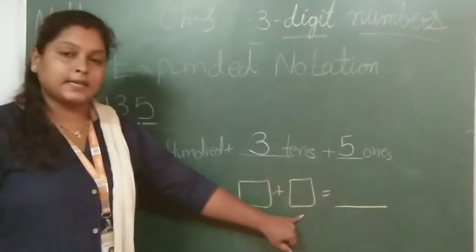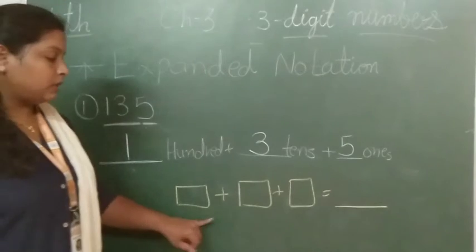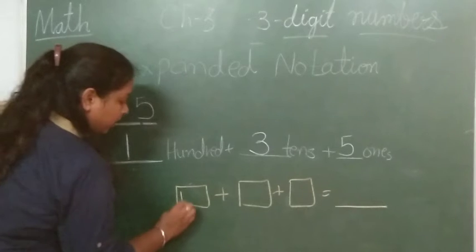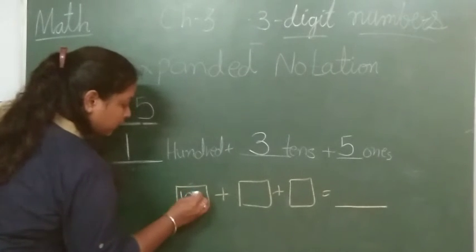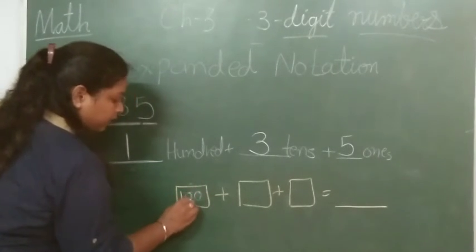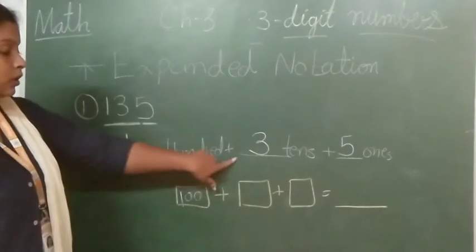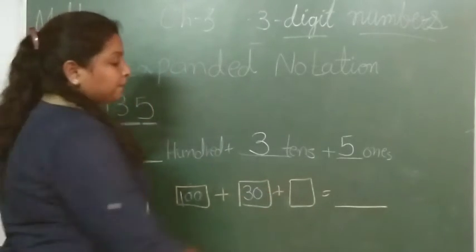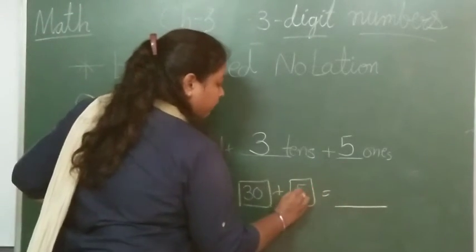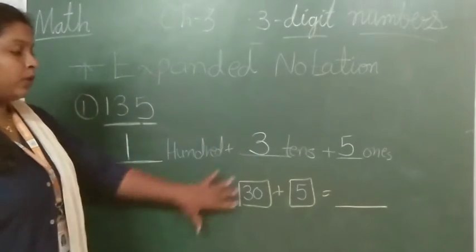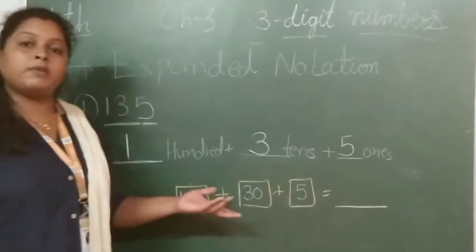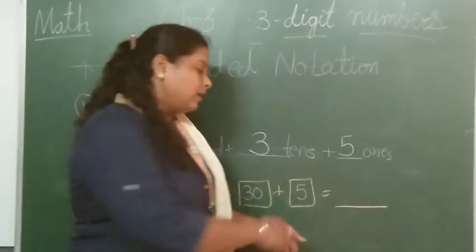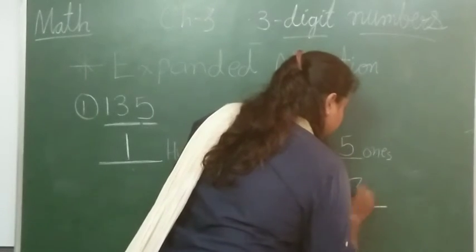Now for the 3 boxes given to you — 1st, 2nd, and 3rd. The 1st is the hundreds place, so we will write 100 there. Then 3 tens, which means 30. Plus 5 ones, which is 5. Now after doing all these things, which number will come? The number 135. So we will write it like this: 100 plus 30 plus 5 equals 135.